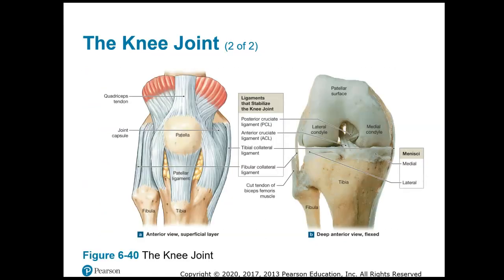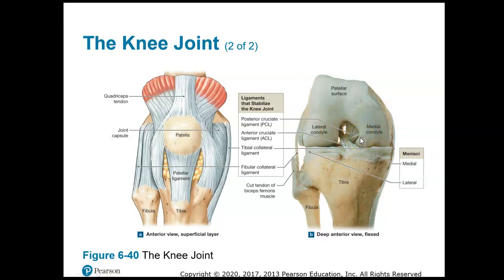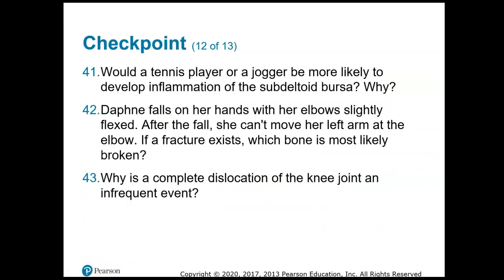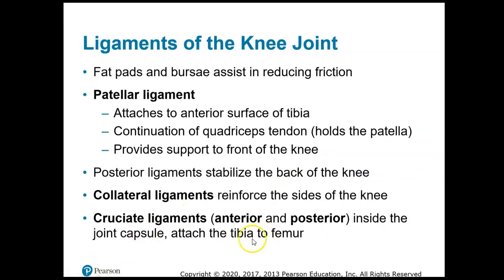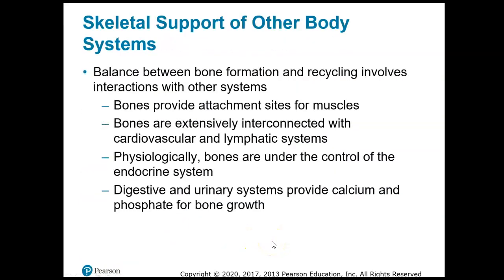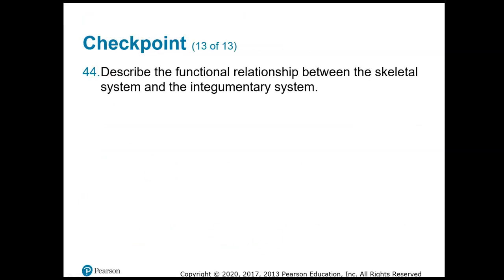Here is some information on the knee joint, and here are the pictures of the cruciate ligaments — your ACL and your PCL. See how they cross: ACL and PCL. They basically hold together the tibia and the femur — the cruciate ligaments attach the tibia to the femur. And that is it. It was a long chapter.